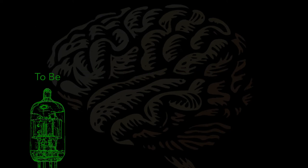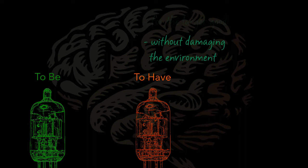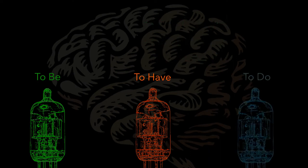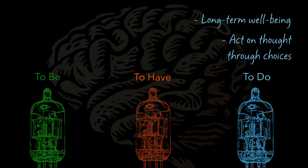Choices that will guide our to-have valve - to have without damaging the environment, to have without compromising the larger good. This will then fire up the to-do valve and lead to action that is focused at realizing thought-through choices that ensure our long-term well-being without harming other inhabitants of this planet or our environment.